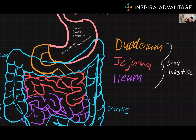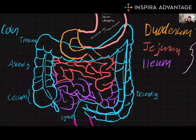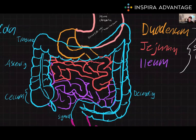After moving through the jejunum, we then move into the ileum, the final part of the small intestines. It is about 3.5 meters long and continues to absorb nutrients. It also absorbs vitamin B12 and bile acids. The ileum connects to the large intestine via the ileocecal valve. The big takeaway for the small intestine is that this is where the majority of nutrient absorption occurs.